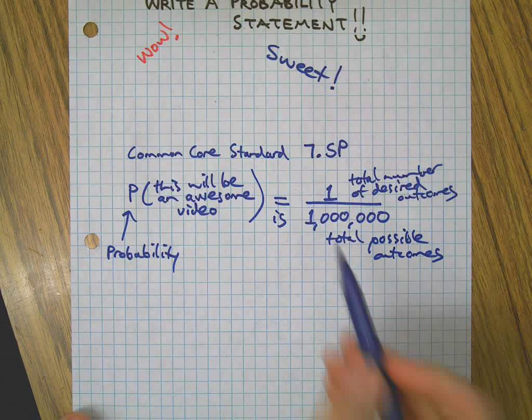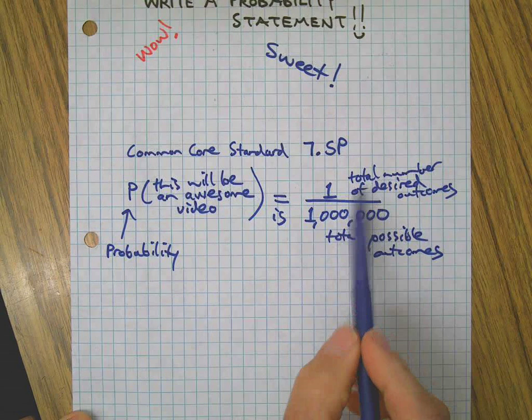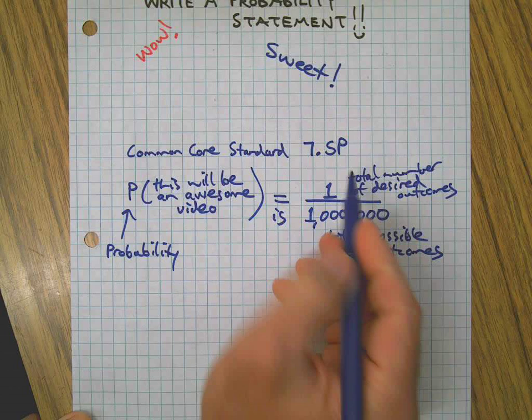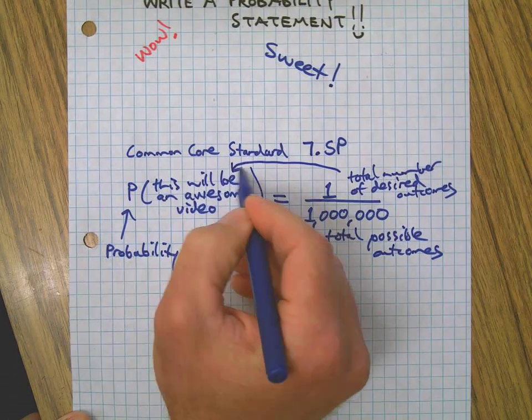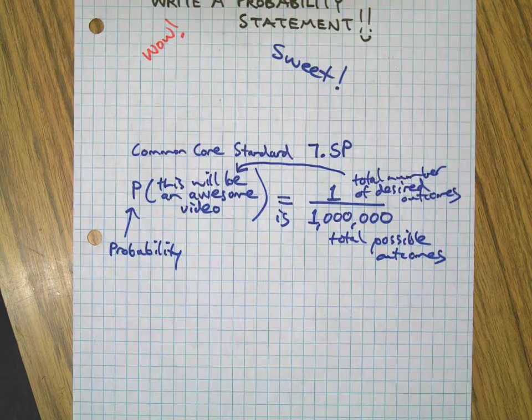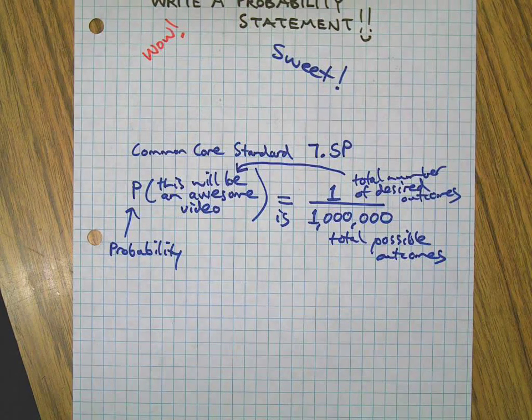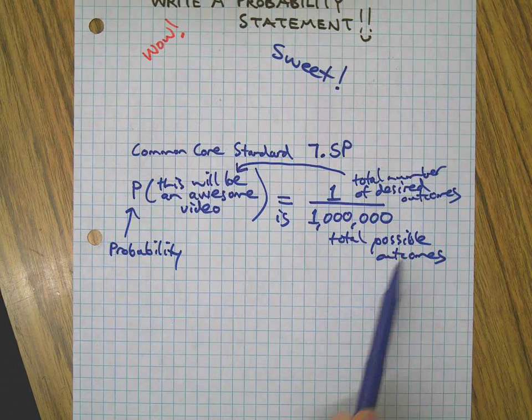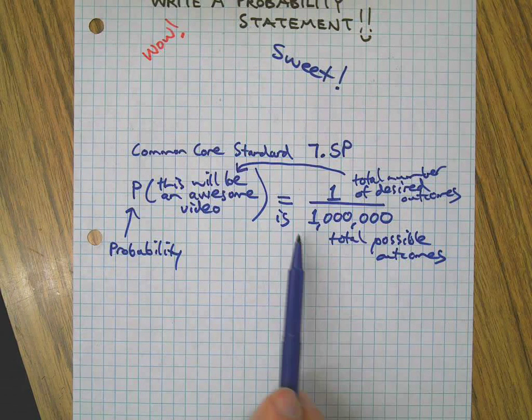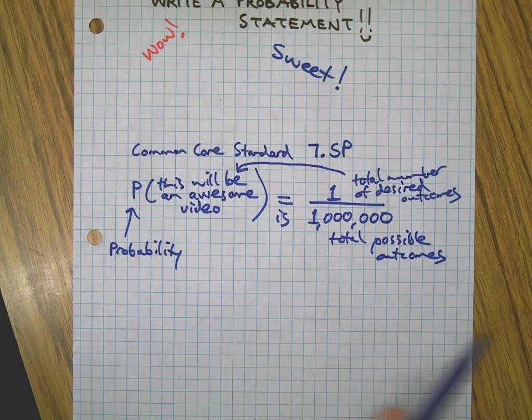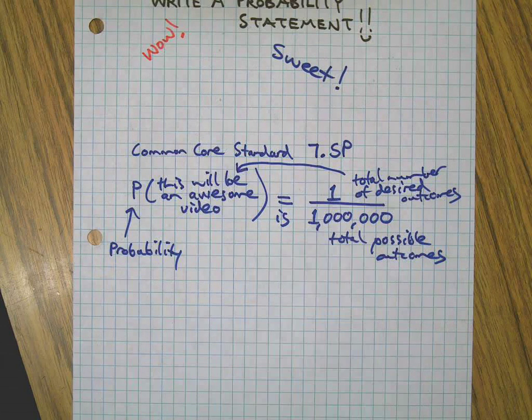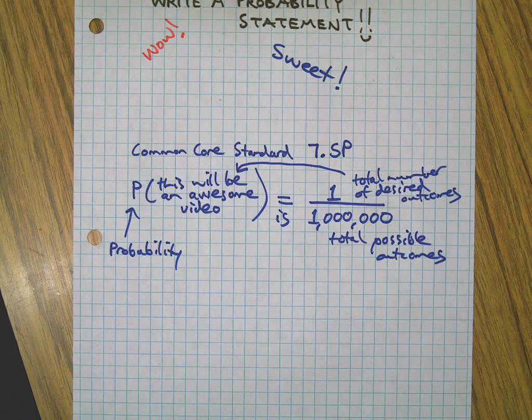On top of the fraction is the thing you're looking for, which is generally related to that over there on the left side of the equal sign. And on the bottom is the total number of possible outcomes. Assuming I would make a million videos, this might be the best one. Chances are one out of a million.